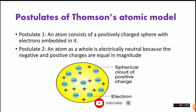The second postulate states that an atom as a whole is electrically neutral, because the negative and positive charges are equal in magnitude. This means the whole atom is neutral. According to Thomson's model, the number of electrons is equal to the number of protons, so positive and negative are present in the same amount, making the whole atom neutral.